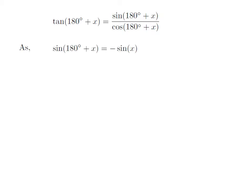We know the trigonometric identity: sine of 180 degrees plus x is equal to minus sine of x. The proof of this identity has been explained in the video appearing in the upper right corner, and the URL has also been mentioned in the description section.